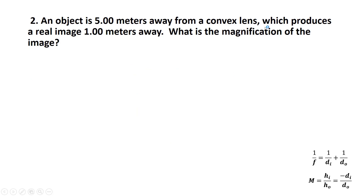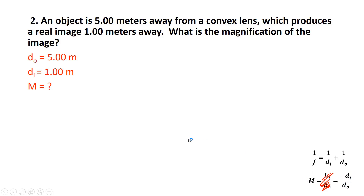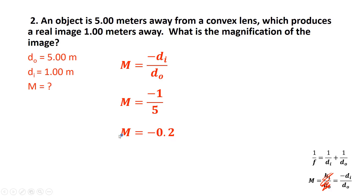Problem 2: Same setup — object 5 meters away from a convex lens produces a real image 1 meter away. What's the magnification? We use M = −DI/DO. Plugging in: M = −1/5 = −0.2. This means the image is one-fifth the height of the object and is inverted because of the negative sign.